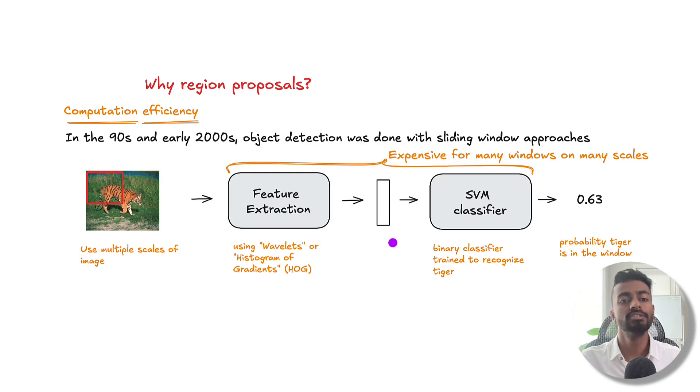Now, an issue with this approach is that we have this very expensive feature extraction, SVM classification step. These are done for many windows on many scales. So hundreds of thousands of times potentially. And so it can become quite expensive.